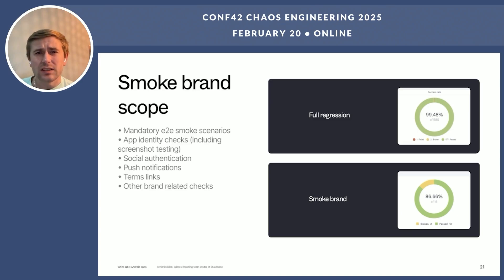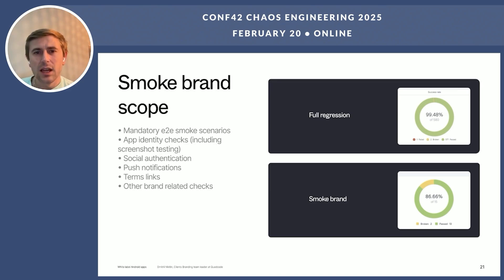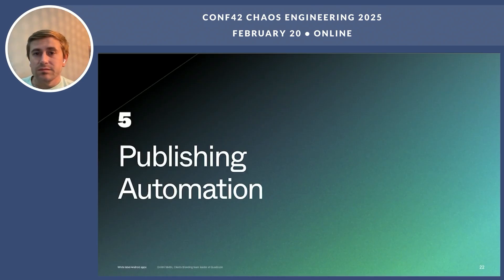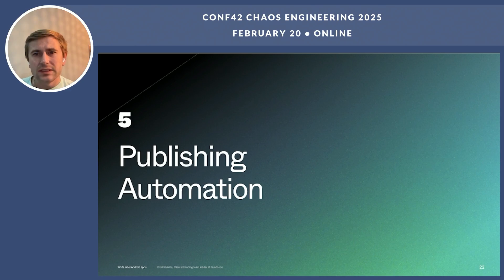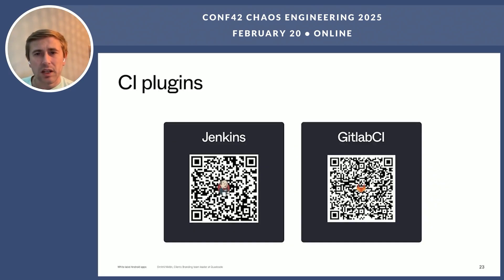By analogy with the on-demand release practice, where we perform impact analysis of changes related to a verified tag, we apply a similar approach here. We fully test only the first application in a given release, and for subsequent ones we run a small brand scope to verify only the brand-specific aspects. We have tested the application — now it's time to publish it. In general, any routine task should be considered a candidate for automation. And if you are dealing with multiple builds, automation becomes even more essential. Fortunately, there are already CI plugins for that, and you can scan QR codes to see guides for Jenkins and GitLab CI.